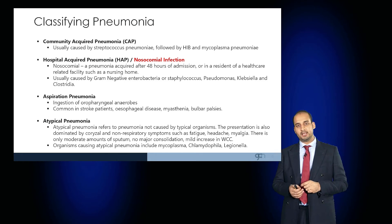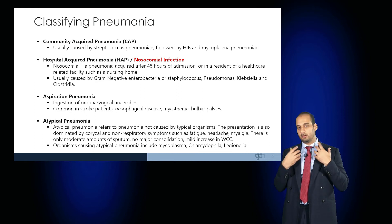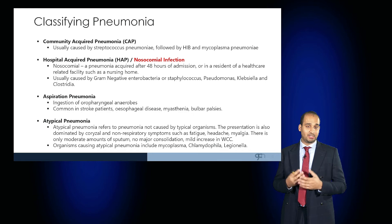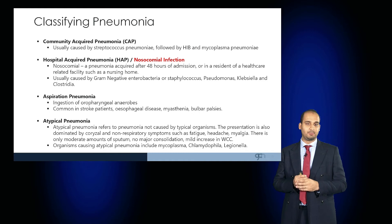An aspiration pneumonia results from the ingestion of oropharyngeal anaerobes that can affect the lungs, and is very common in stroke patients or those with poor swallow where there is some aspiration onto the lungs. Atypical pneumonias are those not caused by typical organisms, and so the presentation is dominated not only by respiratory but also non-respiratory symptoms such as fatigue, headache and myalgia, with only moderate amounts of sputum, no major consolidation, and maybe just a mild increase in inflammatory markers. Organisms that can cause atypical pneumonia include Mycoplasma, Chlamydia and Legionella.